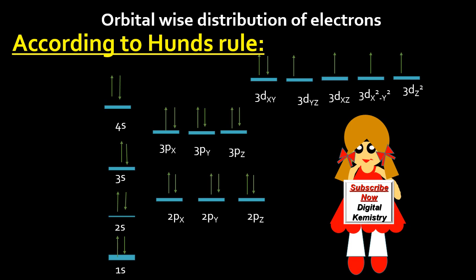Then come to the 2p orbitals having 6 electrons. First fill it singly, then doubling up.